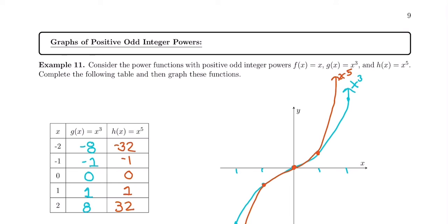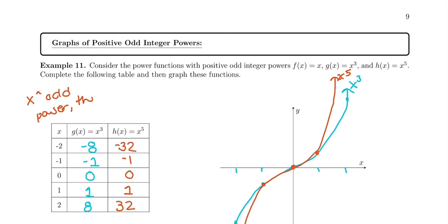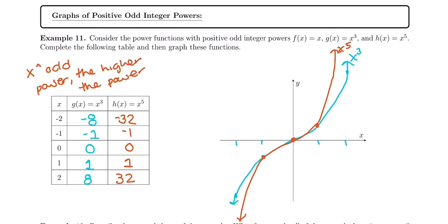So x to an odd power, the higher the power, the more narrow the graph. Similar findings, different shapes for even versus odd, but if you raise it to a higher and higher power, you get a more narrow or steep graph.